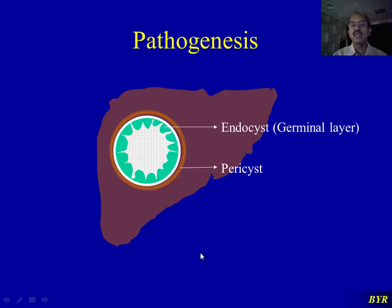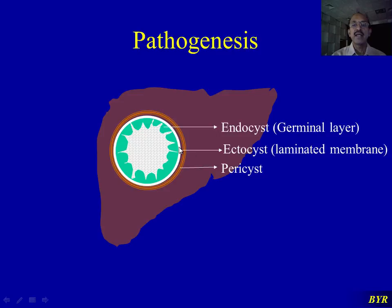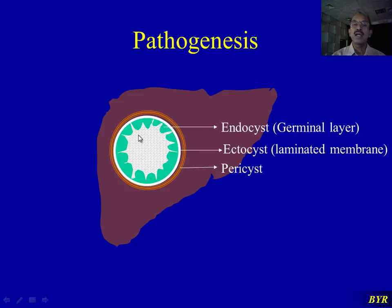The surrounding capsule formed by liver parenchyma is called the pericyst — it belongs to the host, not the parasite. Inside the pericyst is the ectocyst, which is the laminated membrane. Lining the inside of the laminated membrane is a layer of cells called the germinal layer, the most important layer of the embryo. The germinal layer produces other germinal cells, secretes hydatid fluid, and forms the laminated membrane — everything of the larva is produced from this germinal layer.